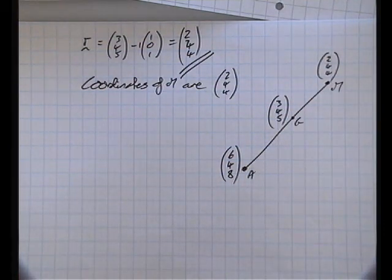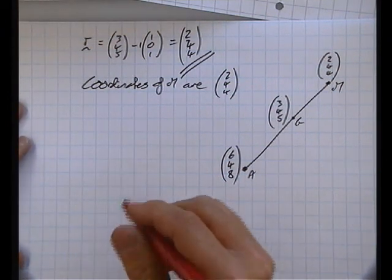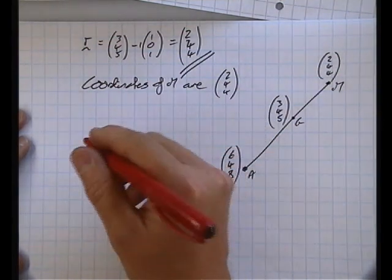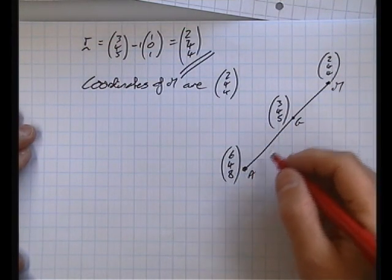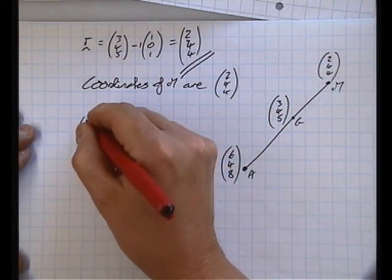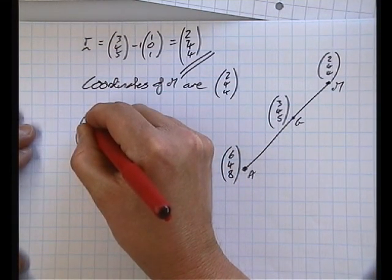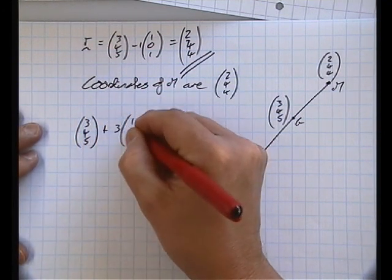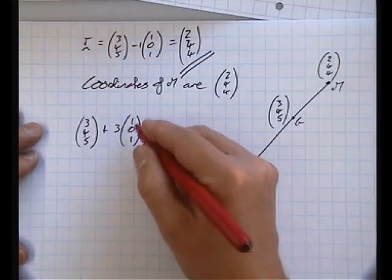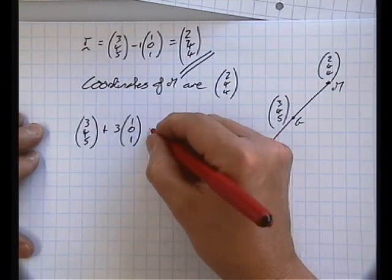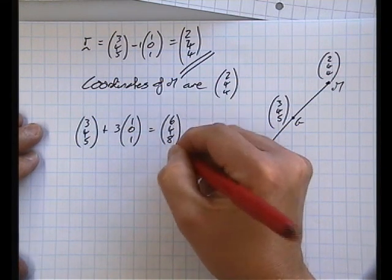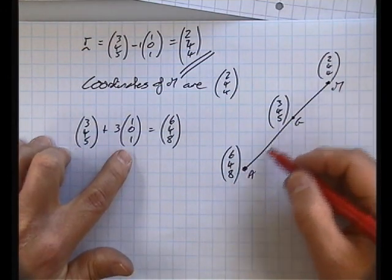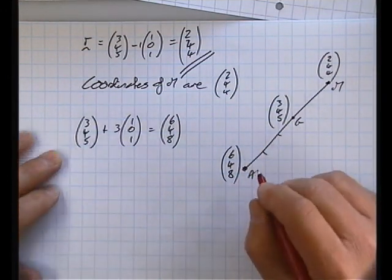Now there are a number of ways of solving this, you'll see from the mark scheme, but this one struck me as quite straightforward. Now notice that to get from G to A, we've got (3, 4, 5) plus 3 lots of our direction vector for this line. Remember, (1, 0, 1) is the direction vector of this line, gets us (6, 4, 8). So to move from there to there, it takes 3 lots of that (1, 0, 1). So we can imagine sort of breaking it up into 3 parts like that.